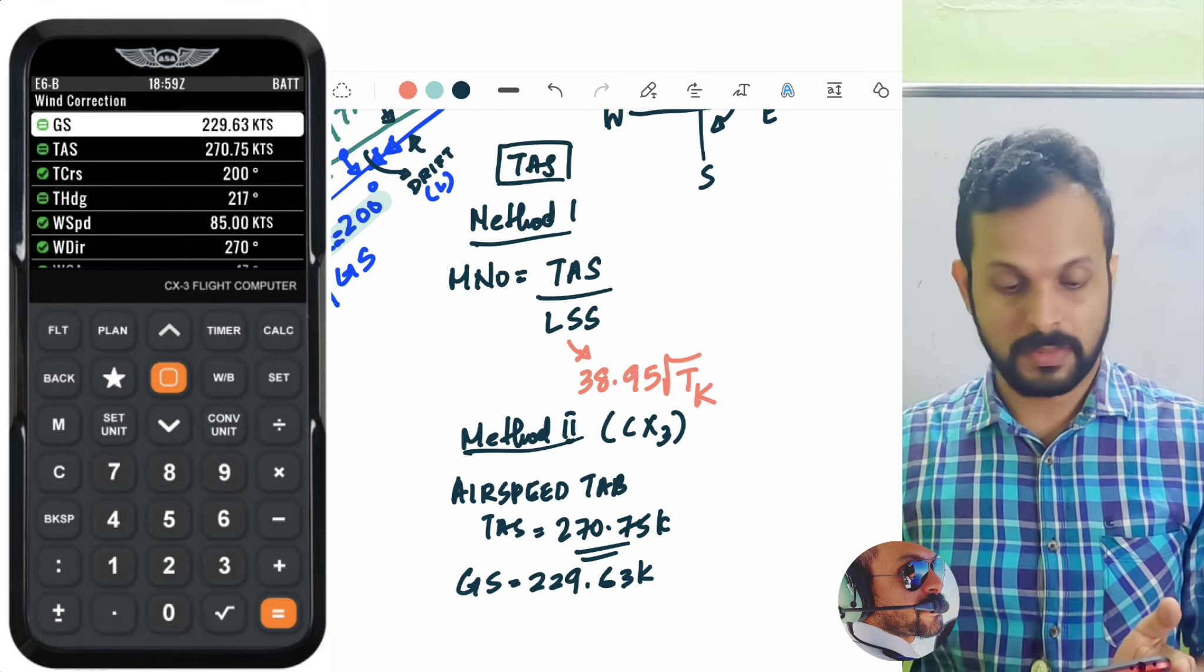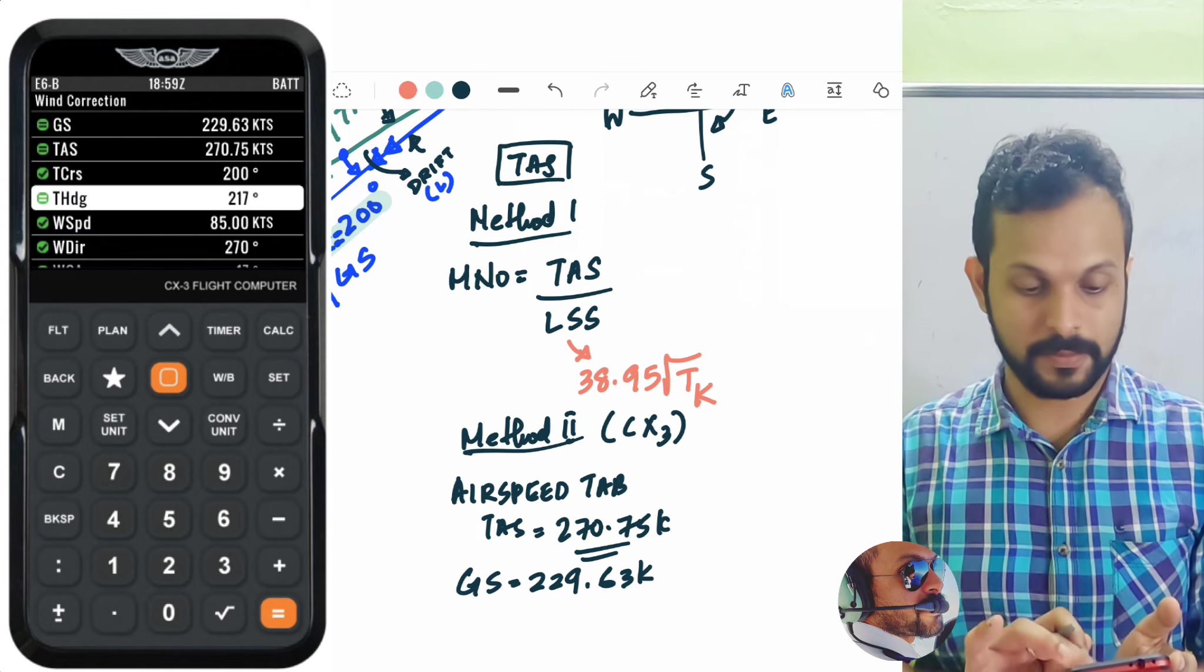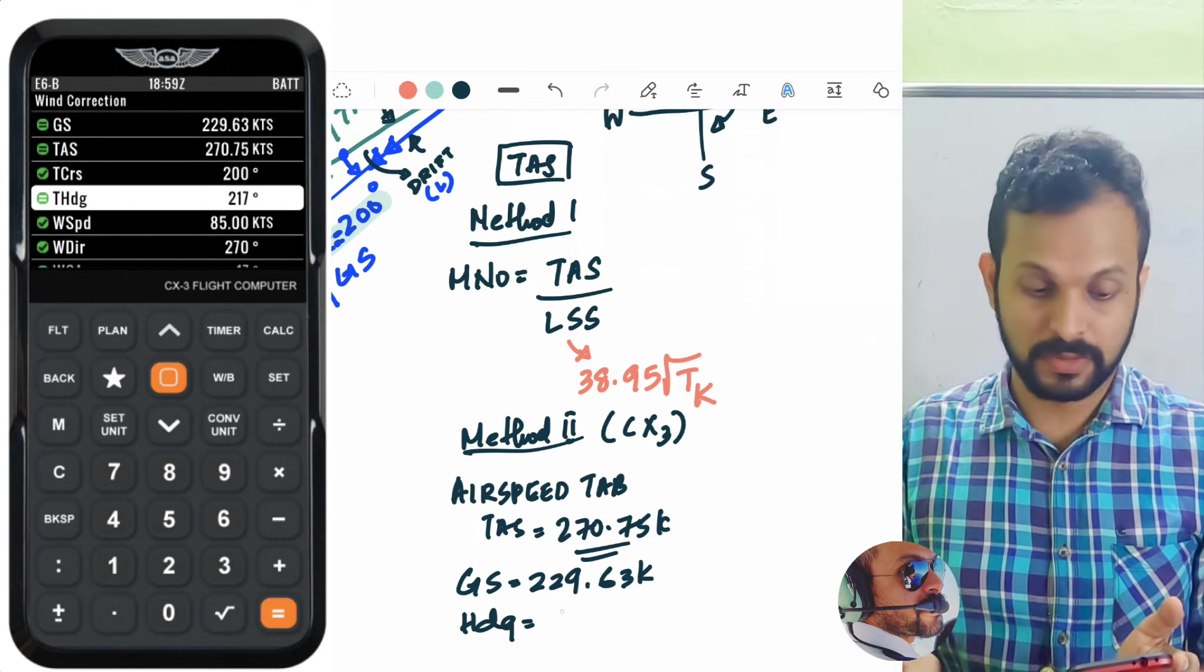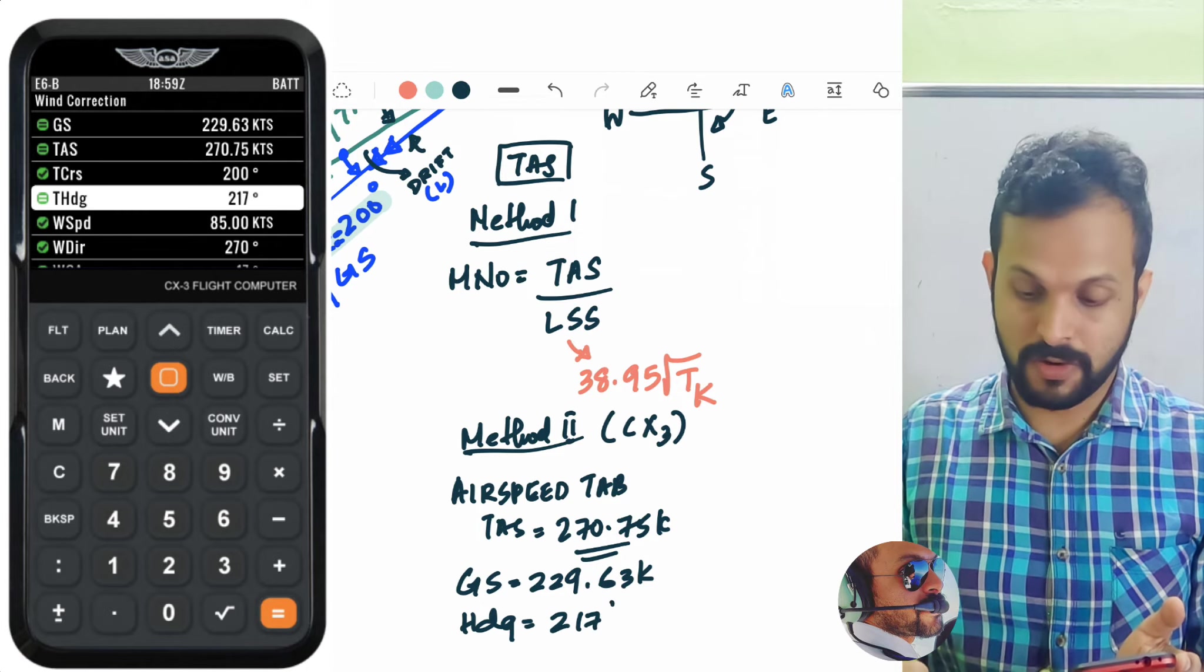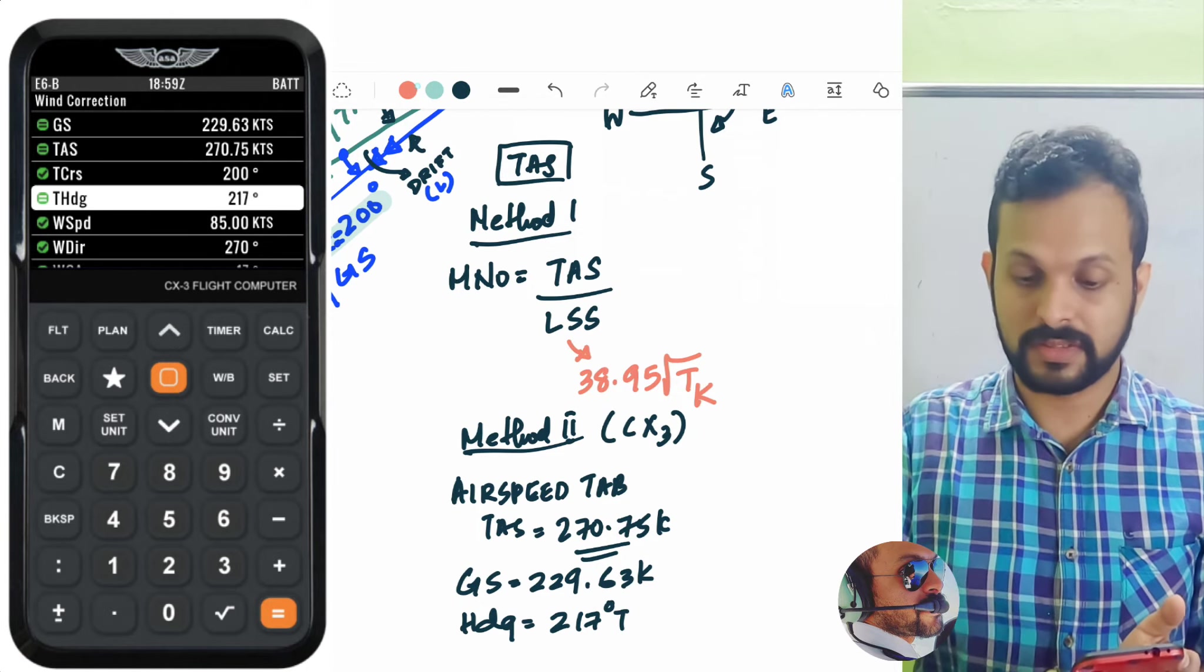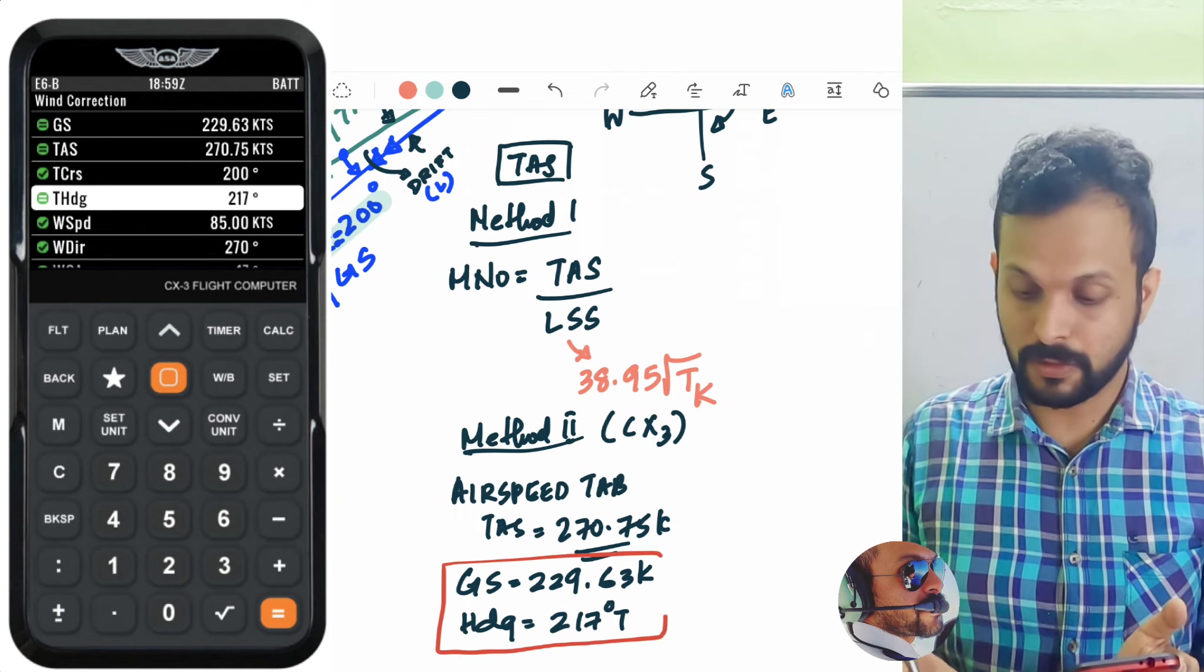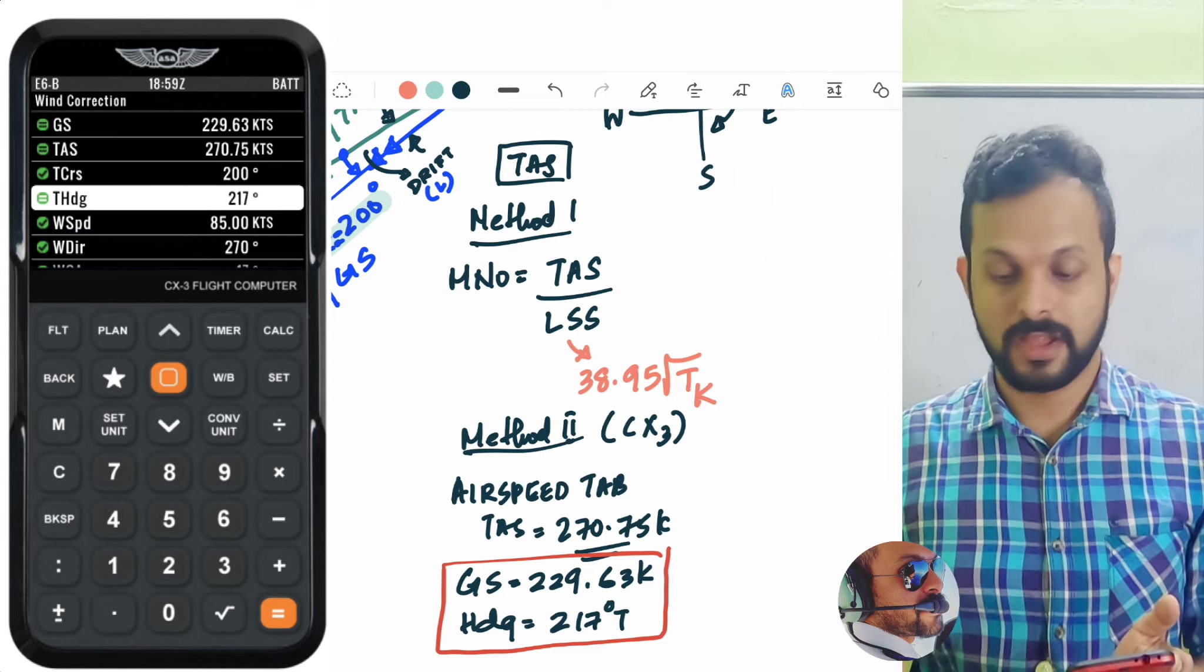So the ground speed is 229.63 knots and look at the heading. The heading which is the true heading here is 217 degrees true. Perfect. So these are the two primary values which we actually need, ground speed and heading.